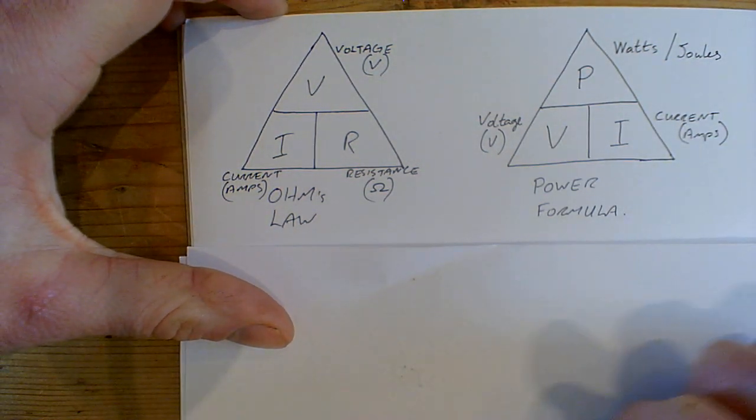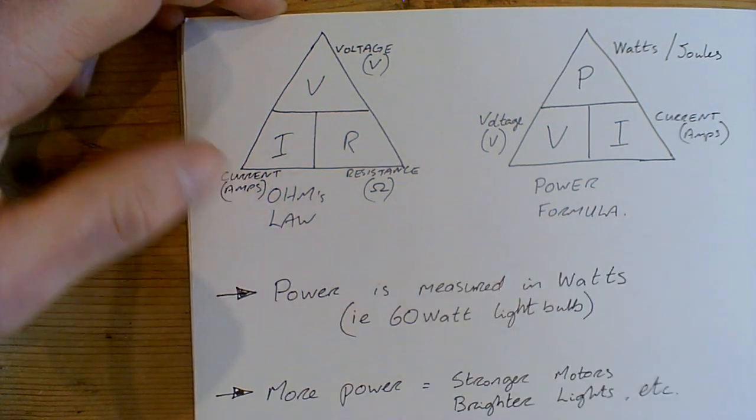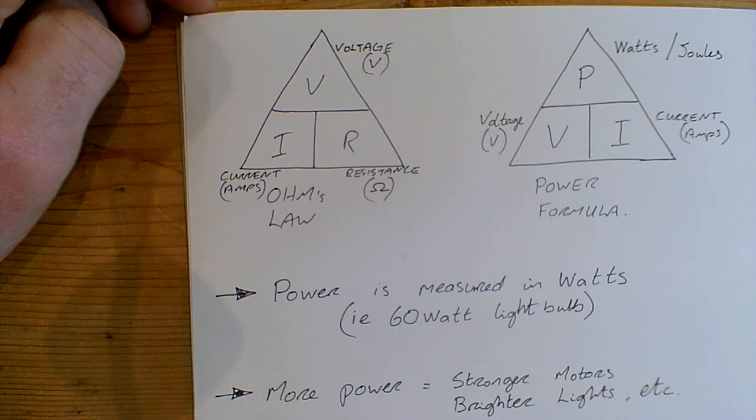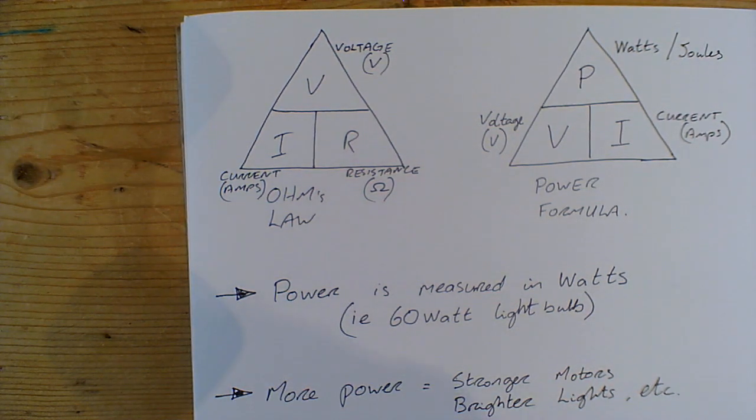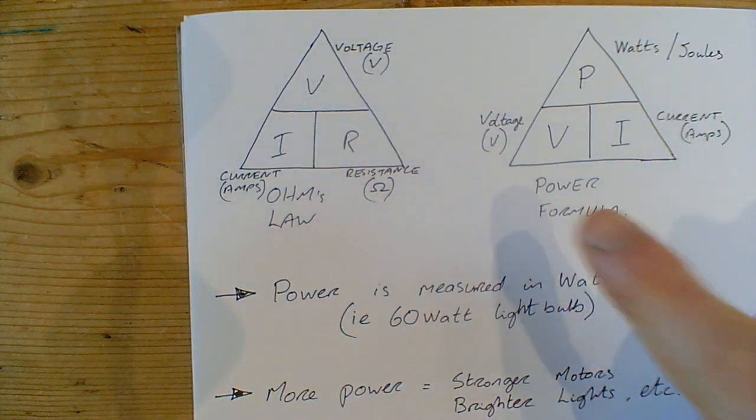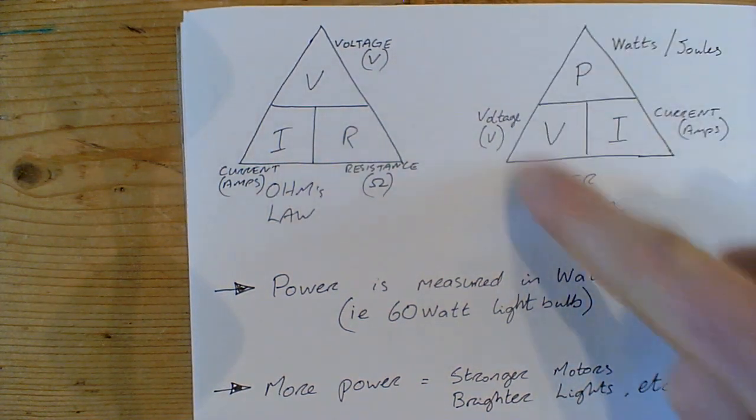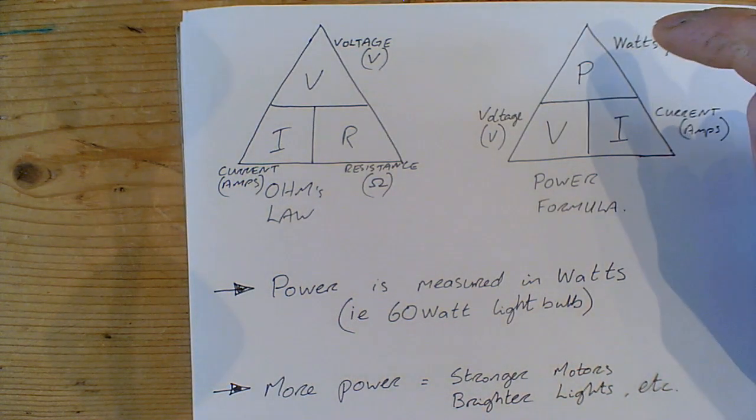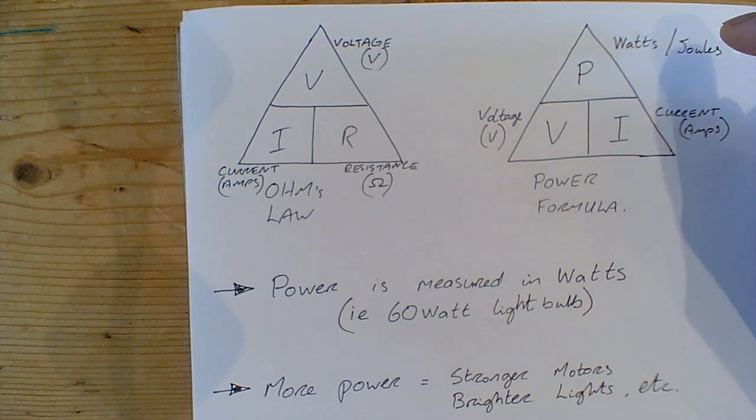We need to add in more items now, things like our power. Power is measured in watts. For example, you can get things like a 60-watt light bulb, and if I go from a 60-watt light bulb to a 200-watt light bulb, you'll see there's a lot more power - it'll be a much brighter bulb. At the top of the triangle we've got power, measured in watts.